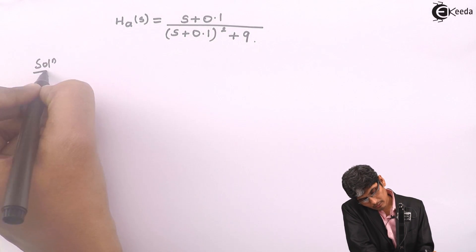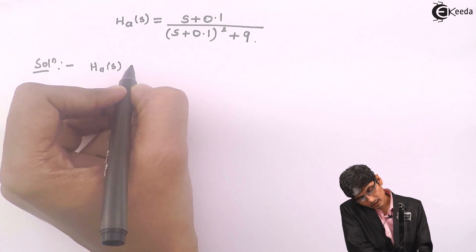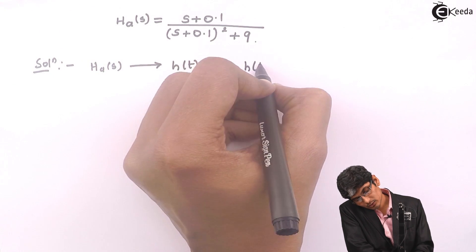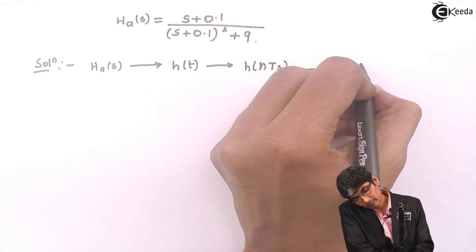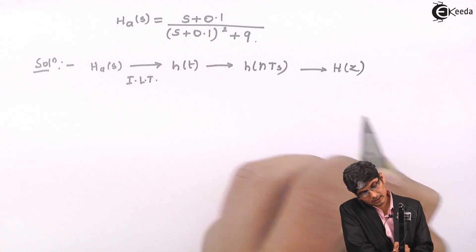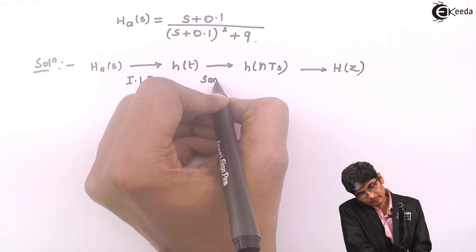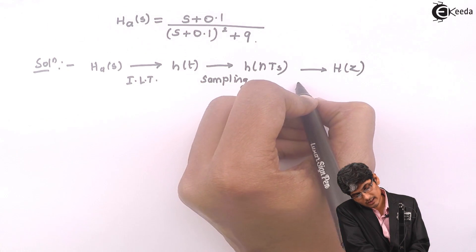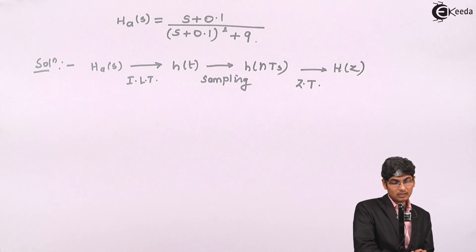For the solution of this problem, I will start with HA of S. From HA of S I will derive H of T. From H of T I will derive H of NTS, and from there I will derive H of Z. From HA of S to H of T is inverse Laplace transform. From H of T to H of NTS is sampling. And from H of NTS to H of Z is Z-transform. So I will apply these three basic steps and we will obtain the answer.